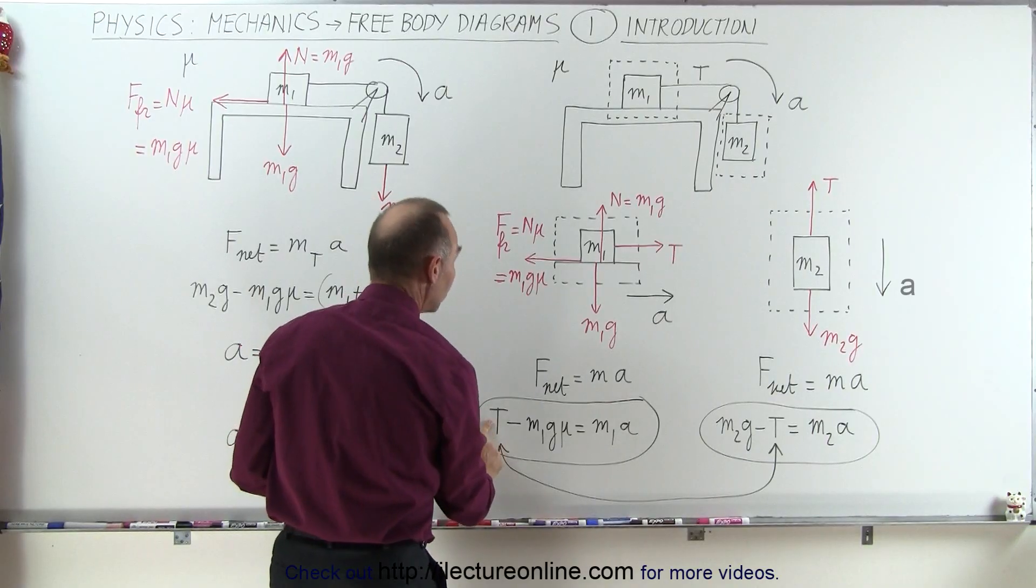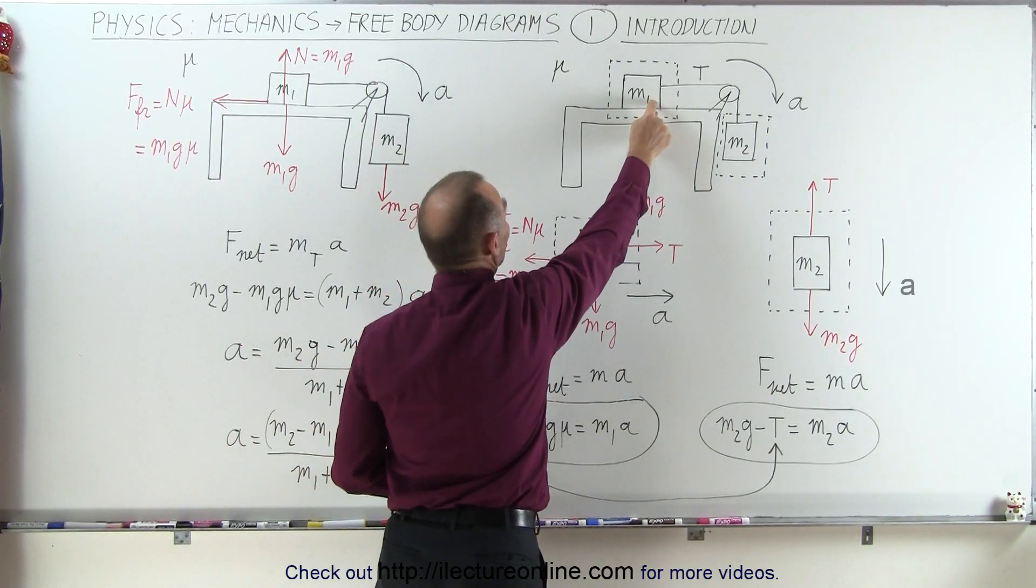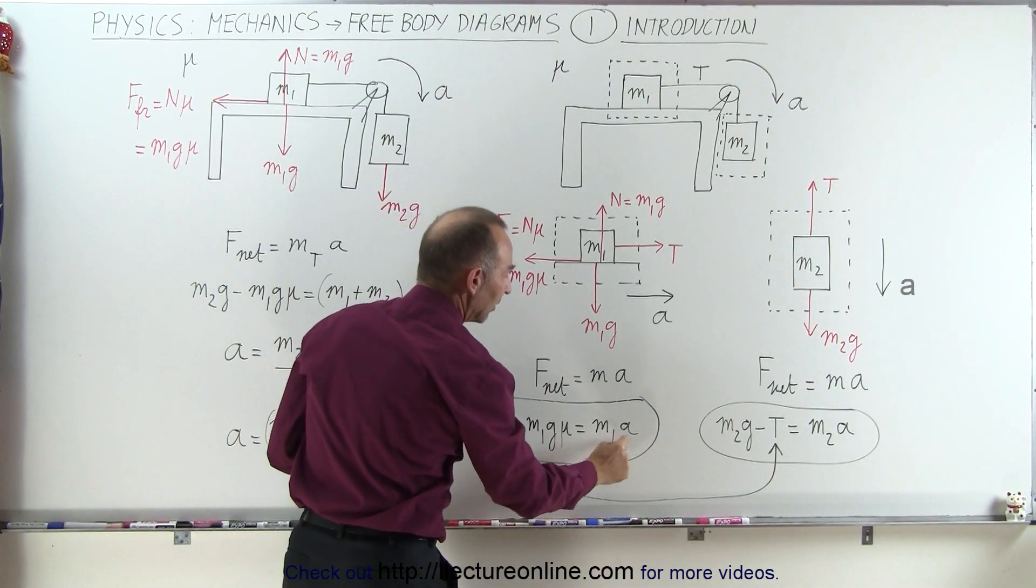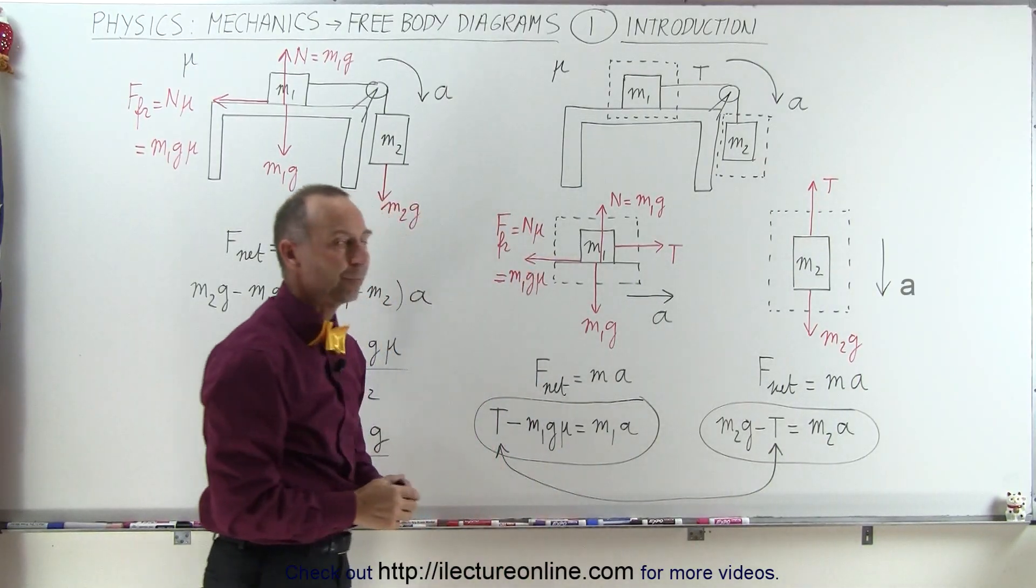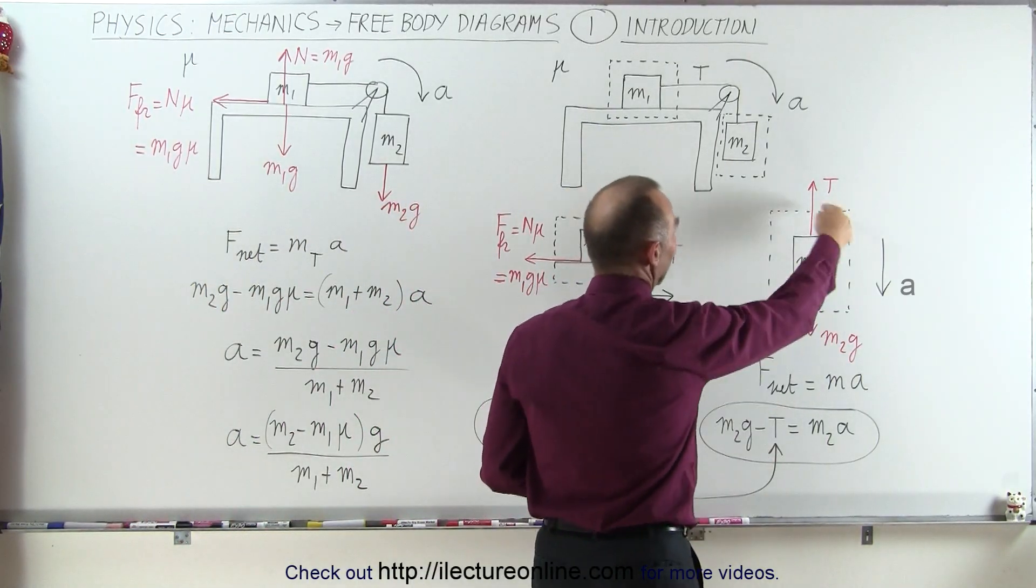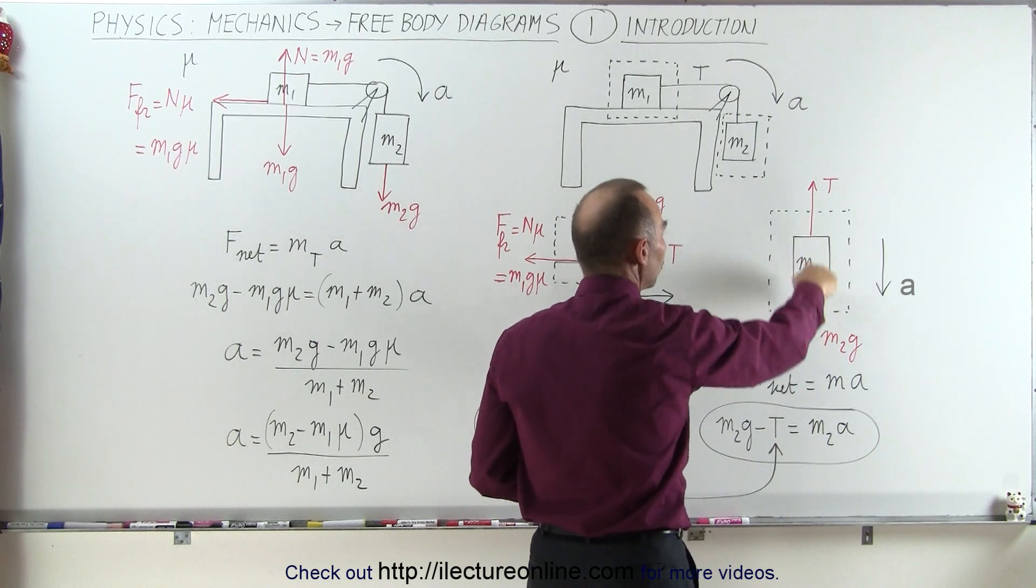In this case the tension in the string is aiding the acceleration of m1 minus the friction force, and that equals the mass of m1 times its acceleration. Then we go to the second free body diagram. We look at simply m2. We see two forces, one due to gravity pulling down and the other one the tension in the string pulling up.